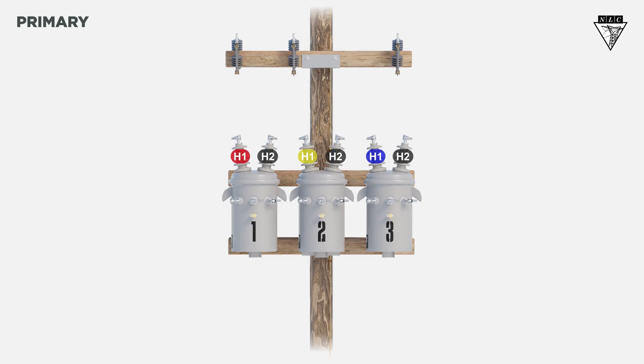Let's start with the primary connections. Connect the H2 bushings of each transformer and tie them to neutral.